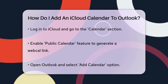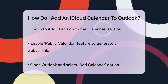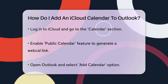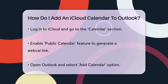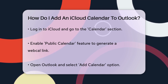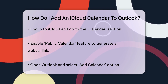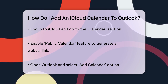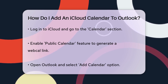Now, head over to the Outlook website or open the Outlook desktop application. Click on the Add Calendar option at the top of the interface. Select Subscribe from Web and paste the WebCal link you copied from iCloud. Give your calendar a name, and Outlook will automatically sync it with your iCloud calendar.